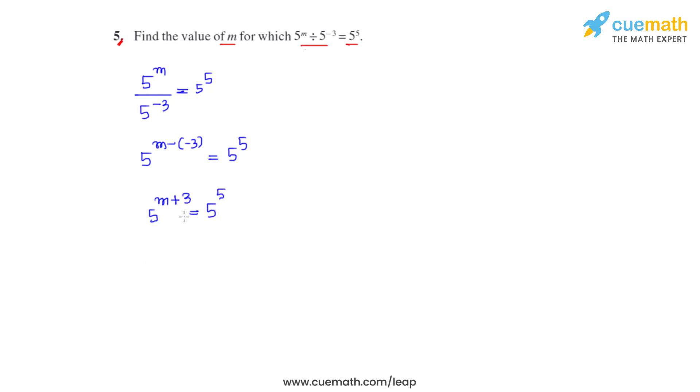Now for the equality to hold good, that is for the LHS to be equal to RHS, the values on both sides must be equal. For that to happen, the powers must also be equal. So we equate the powers and we write m plus 3 equals 5.